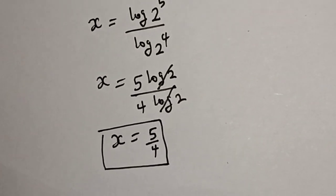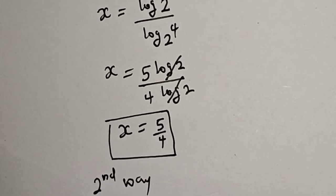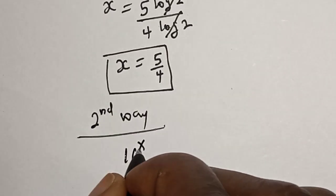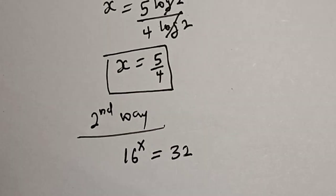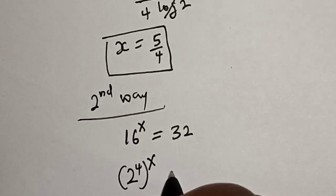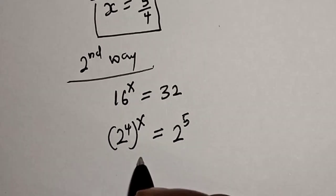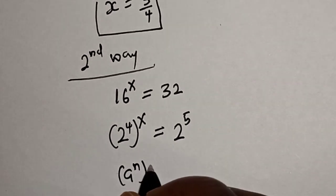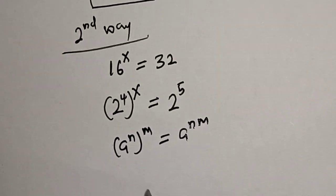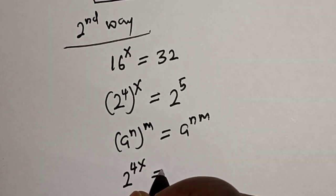For the second method: we have 16 raised to power s is equal to 32. We rewrite this as 2 raised to power 4, raised to power s, is equal to 2 raised to power 5. Applying the exponential rule that a raised to power n raised to power m equals a raised to power n times m, we get 2 raised to power 4s is equal to 2 raised to power 5.